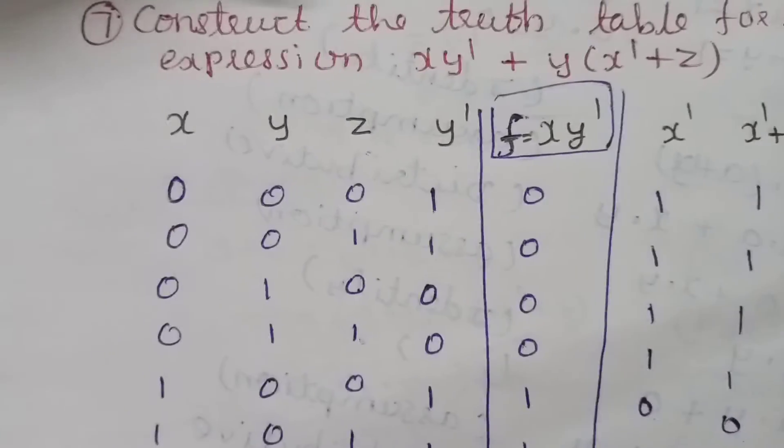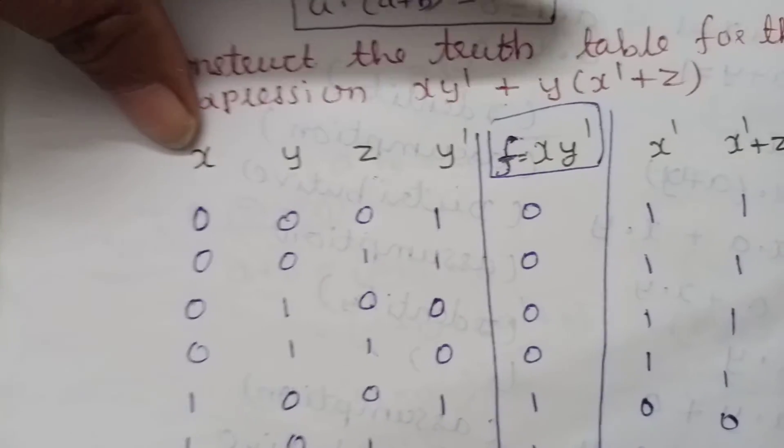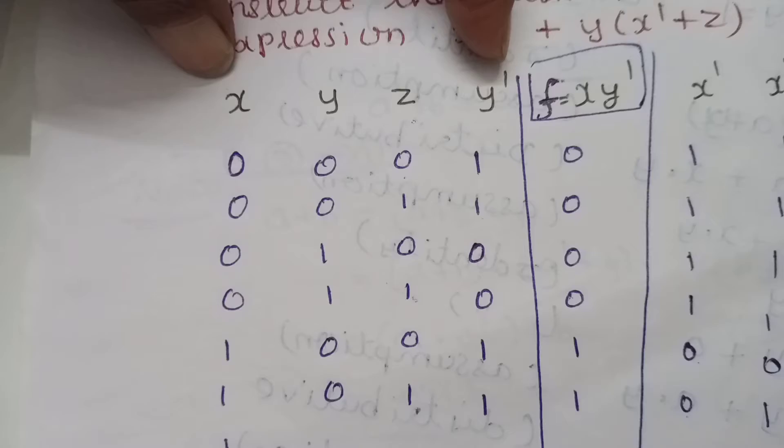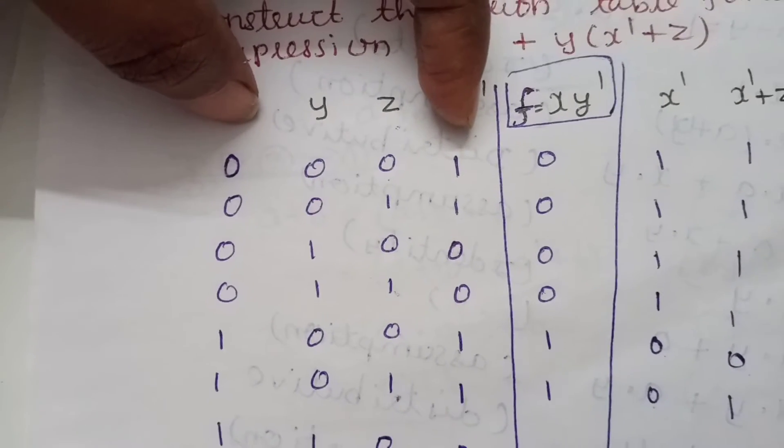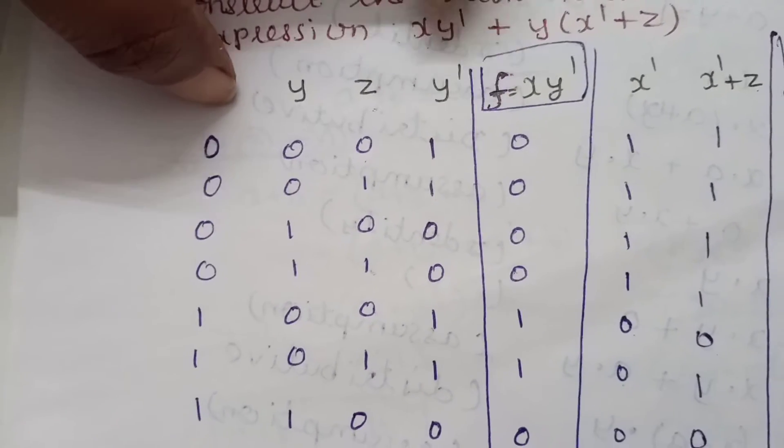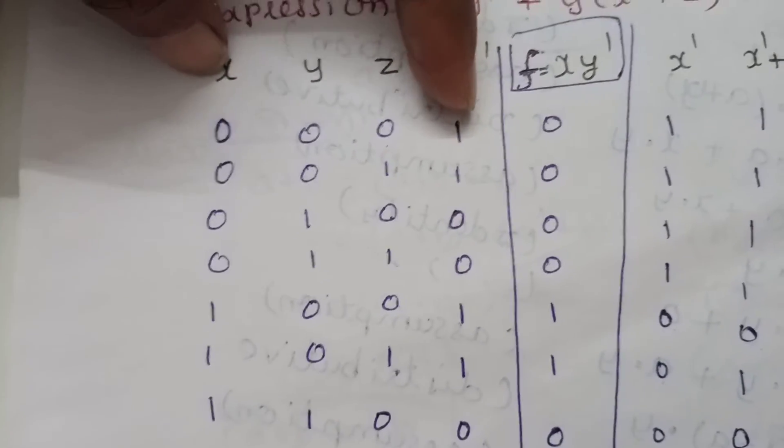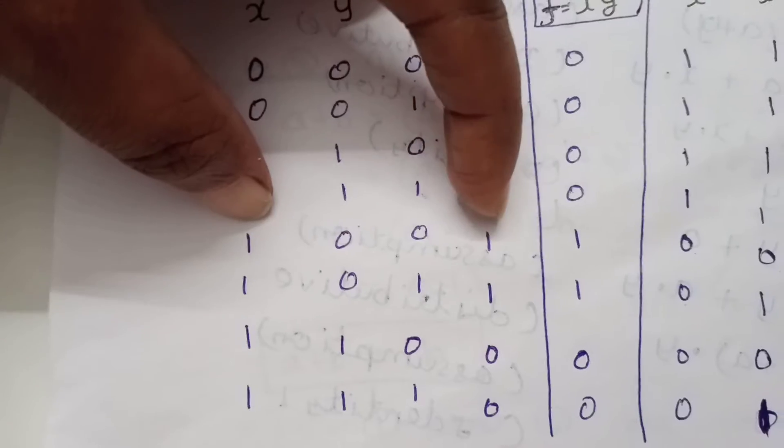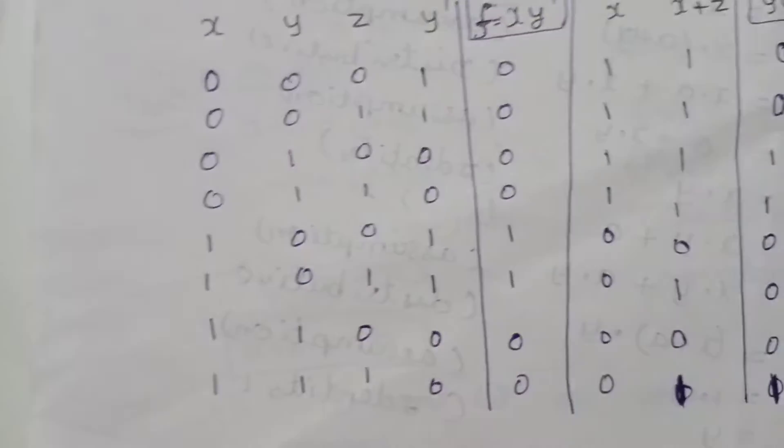Let's say complement is y'. x and y dash multiply together. 1 times 1 is 1 in Boolean algebra. 0 times 1 is 0, 0 times 0 is 0, 1 times 1 is 1, remaining is 0.